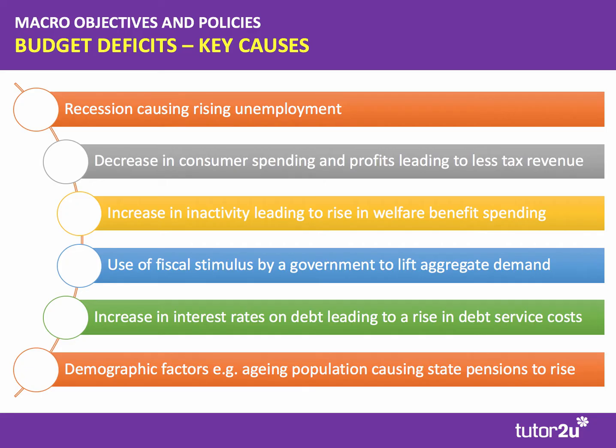There can also be demographic factors — one of the structural factors affecting the budget position. For example, an ageing population causes the total amount spent on the basic state pension to go up. There could also be a structural policy such as the triple lock, where pensions rise by a minimum of inflation, two and a half percent, or the growth of average earnings, whichever is higher. So structural population factors can affect the size of the deficit.